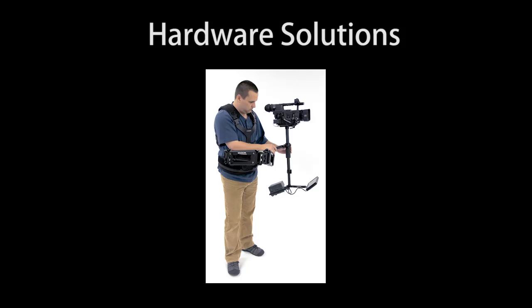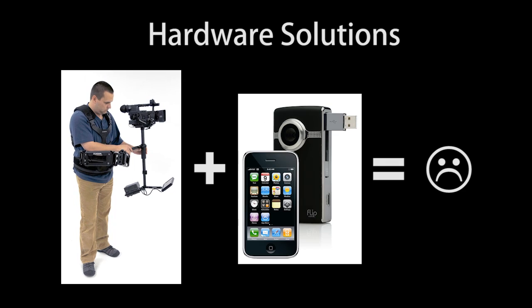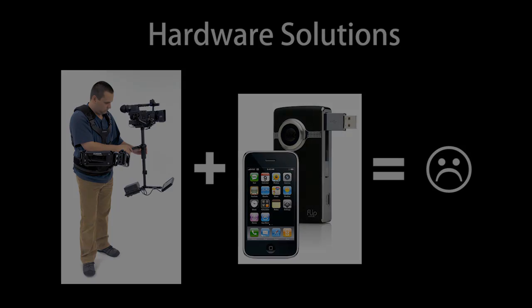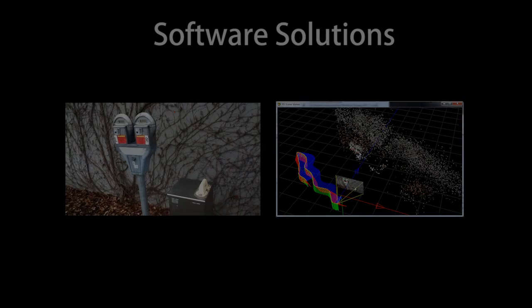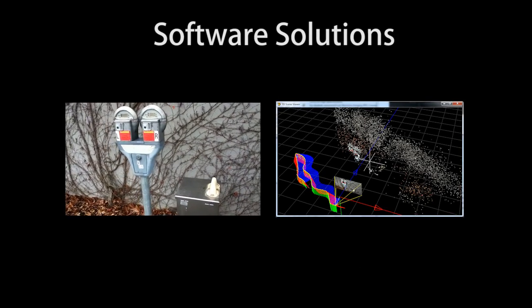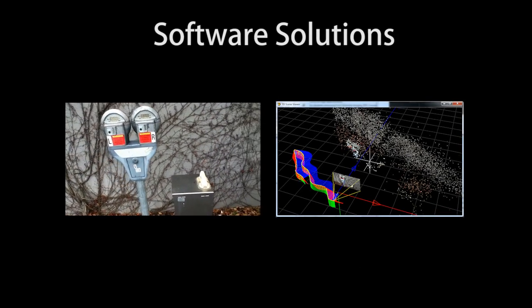One way to stabilize the camera is to use a mechanical solution, like the steady cam shown here. However, these approaches are too expensive and bulky for casual videography. As a result, most of us have to make do with video stabilization algorithms.